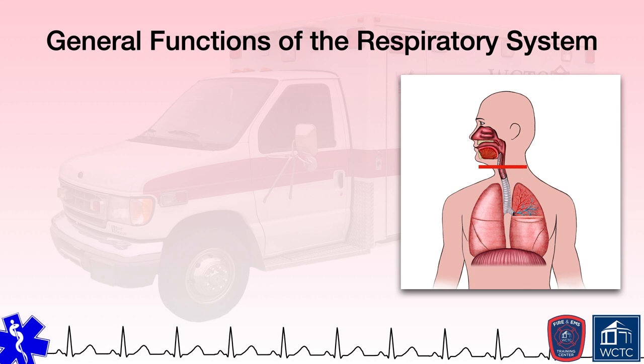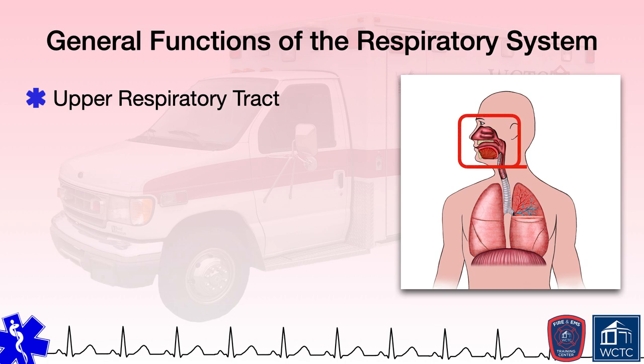The upper respiratory tract contains the nose, mouth, tongue, jaw, oral cavity, larynx, and pharynx. These structures perform a multitude of functions that also incorporate components of other bodily systems such as the digestive and nervous systems.